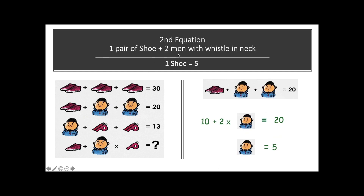Now jumping on to the second equation. In the second equation we have one pair of shoes plus two men with a whistle in the neck. This is our second equation. So at the end of the second equation we have got two values: the pair of shoes is equal to 10, and a man with whistle in the neck is equal to 5.